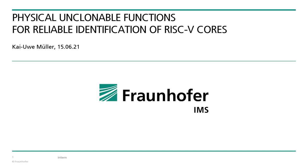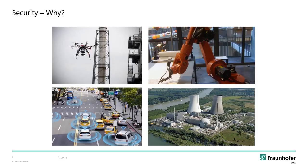Welcome to this talk about physical unclonable functions and how they contribute to the security of RISC-V cores. We expect RISC-V-based processors to be featured in upcoming applications where tailoring the CPU to the application brings a major benefit in terms of energy efficiency, real-time capability, or safety and security. RISC-V cores will likely be controlling drones, collaborative robots, or autonomous vehicles, and RISC-V will also be a candidate for electronics in critical infrastructure like power plants.